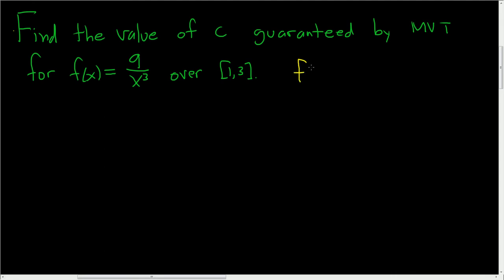So the average value of a function, f of c, is defined to be 1 over b minus a times the definite integral from a to b of f of x with respect to x.